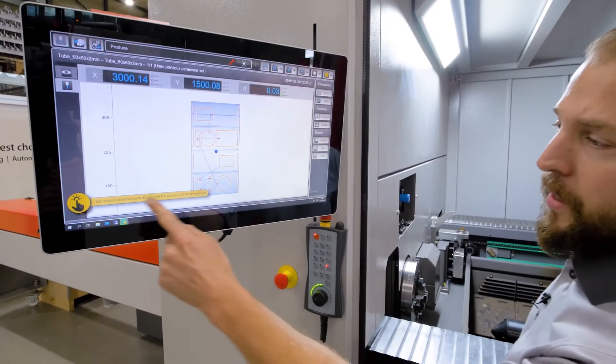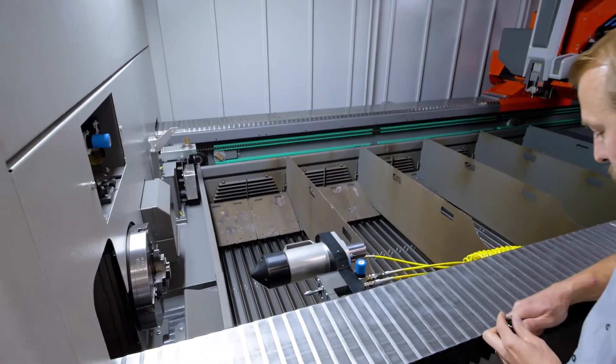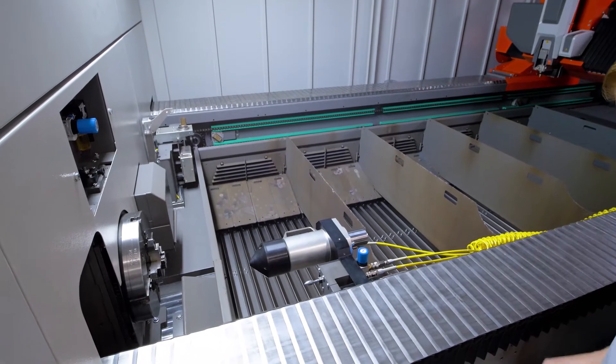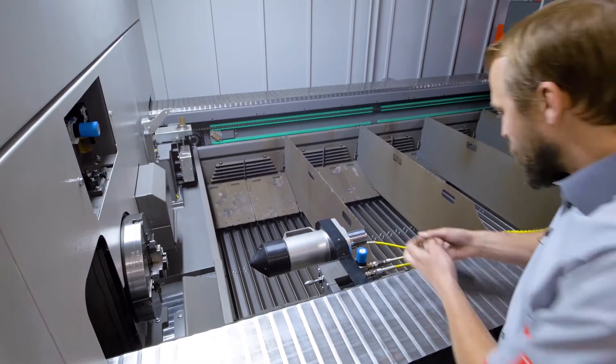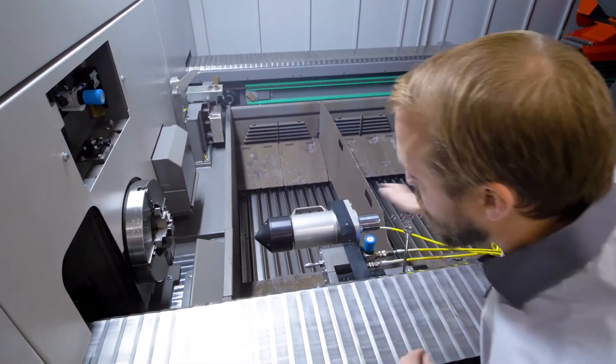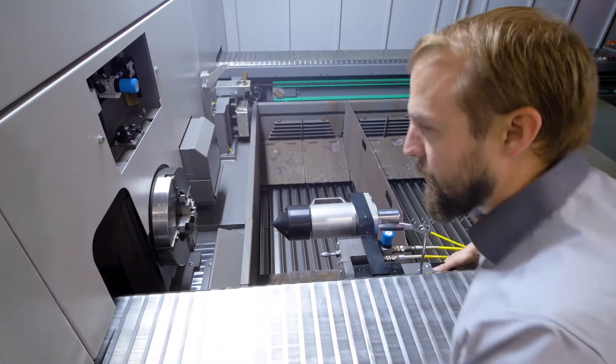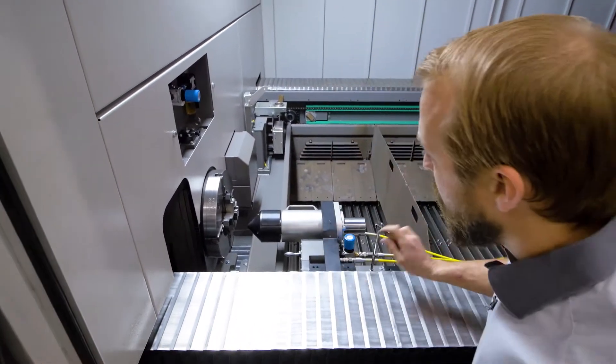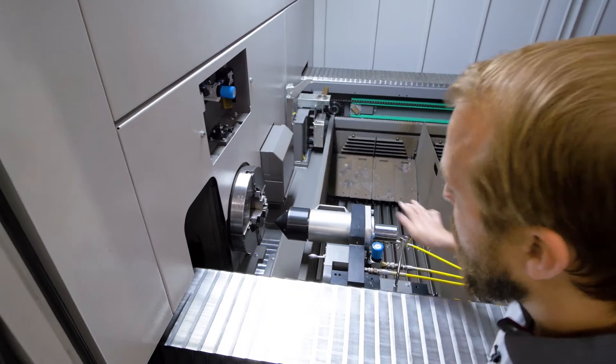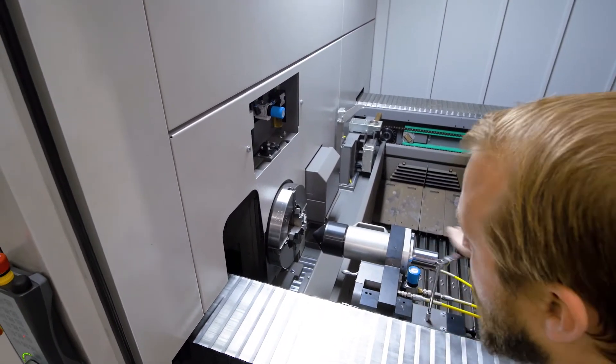The next thing is to put the tailstock at the same height as the rotary axis. We have a small screw that we can move up all the way to control where we are. We are just controlling in the front that both are more or less at the same height. That doesn't need to be very precise.